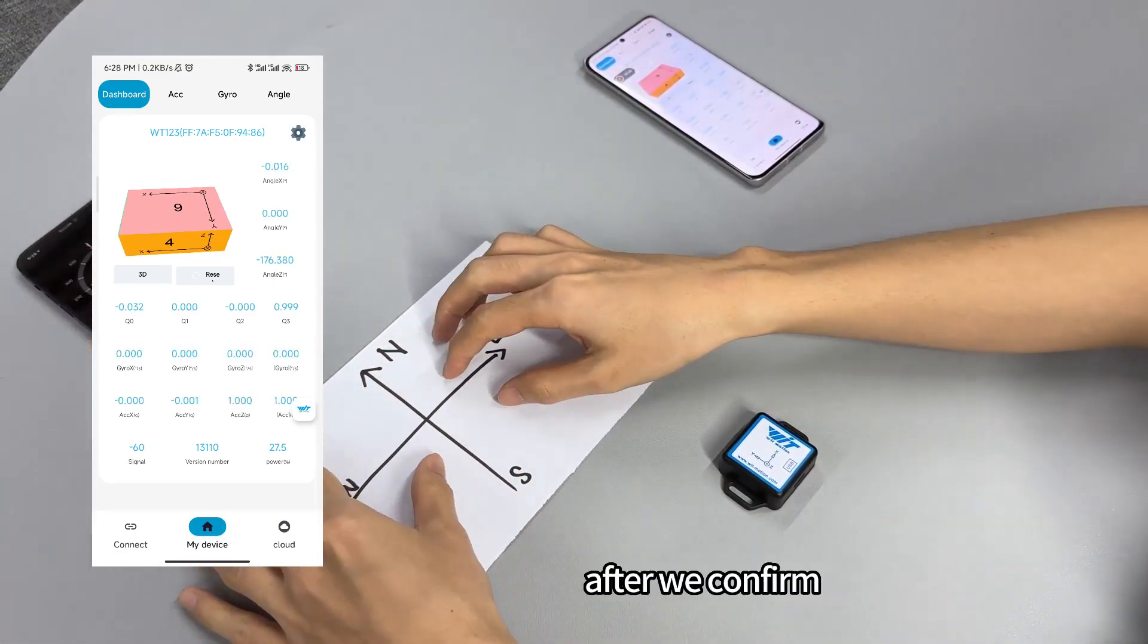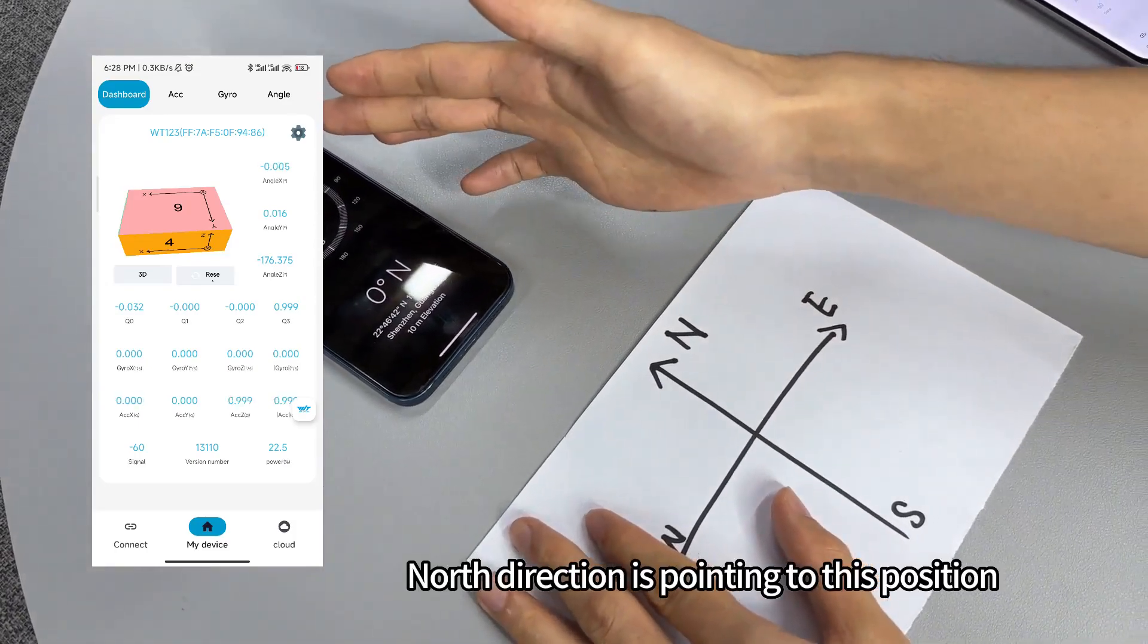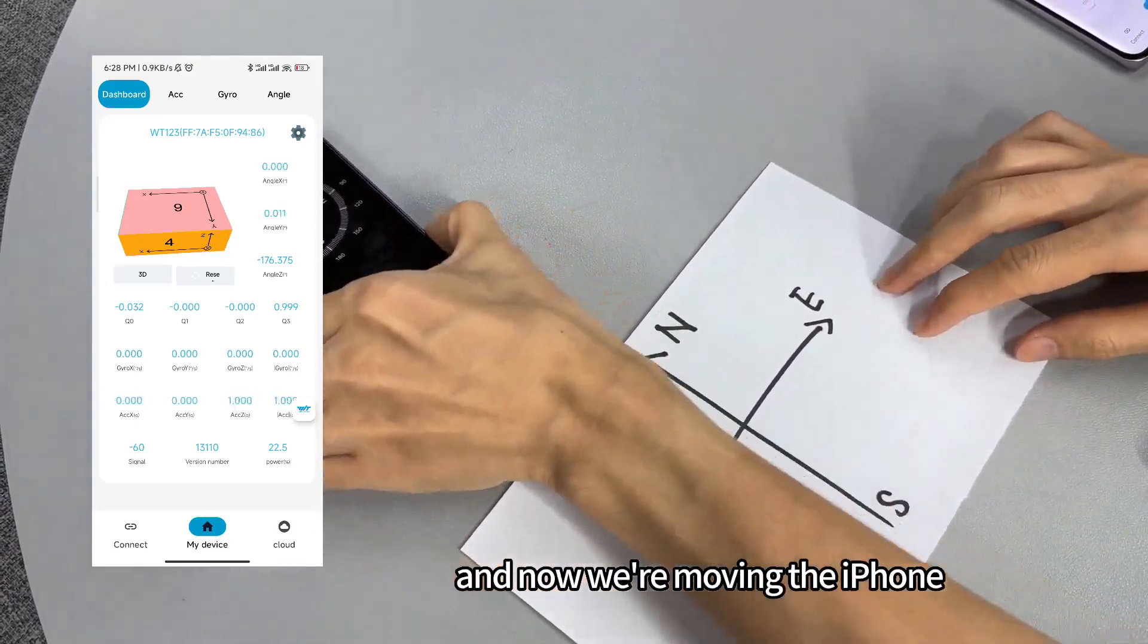After we confirm, you can see the sensor's north direction is pointing to this position. Now we are moving the iPhone.